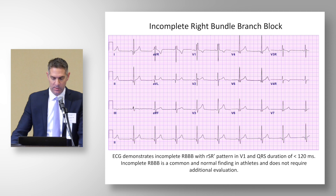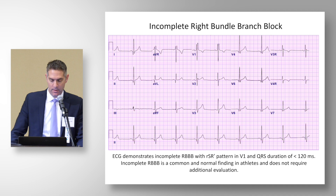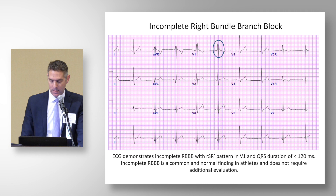Incomplete right bundle branch block shows the rabbit ear appearance in V1 with the RSR prime, but a QRS complex that's less than 120 milliseconds. This is a fairly common finding in our athlete group and, in the absence of other clinical markers of concern, would not require more evaluation.